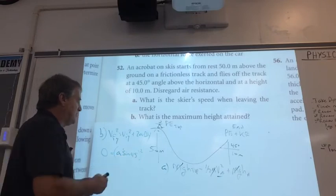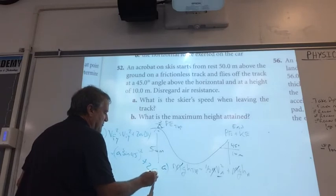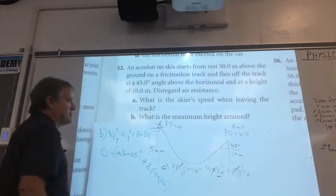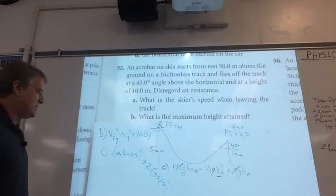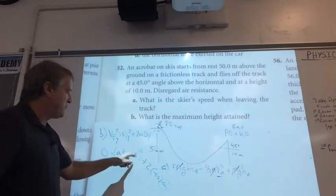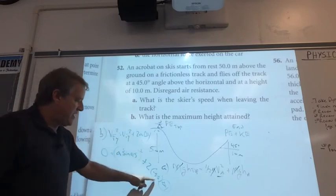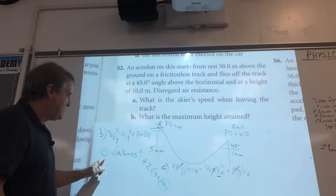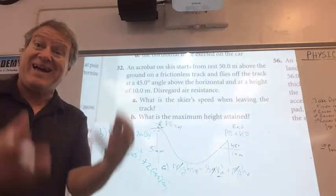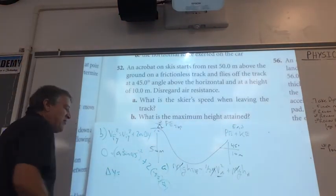So the answer from A times the sine of 45 squared plus 2 times negative 9.8 delta y. What we're looking for is delta y - what's the maximum height obtained. So we take this answer, look how easy this is: the answer from A times the sine of 45 squared, move it to the other side, subtract it, divide it by negative 19.6 - a negative divided by a negative, boom, you get delta y.